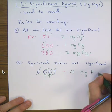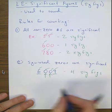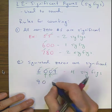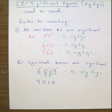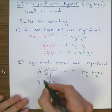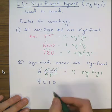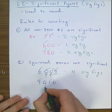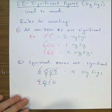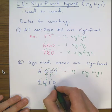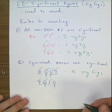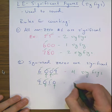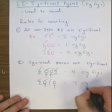Another example: the number 9,010. The nine and the one are significant by rule one. The zero between them is squished between two non-zeros, so it's significant too. However, the trailing zero is not squished — it's not between two non-zeros — so it doesn't count. The total is three sig figs.